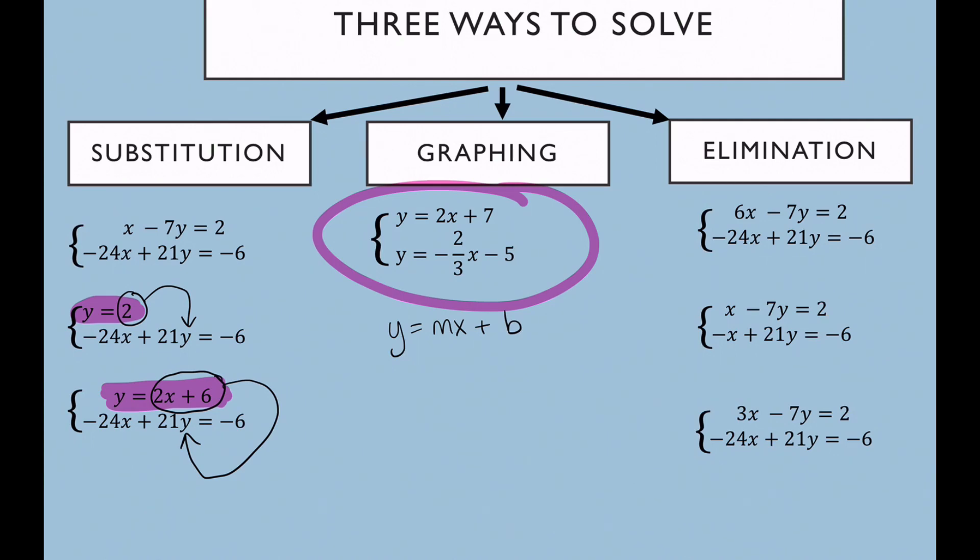For the equation up here on the top of substitution, you'll notice that I've got this X where I have only a 1 coefficient for that term. So in that case, I could easily move my negative 7Y over to the other side by adding 7Y to both sides and then I would end up with X equals 7Y plus 2, which would allow me to substitute that right into X. So that's another good argument for using substitution for those.